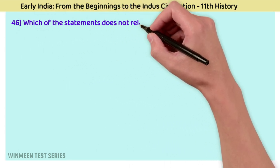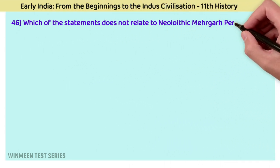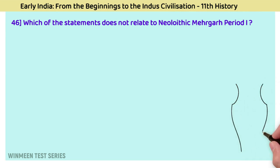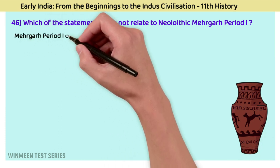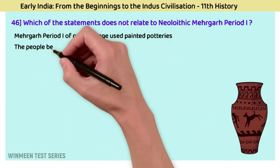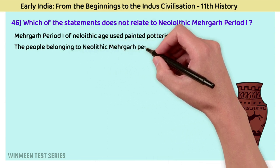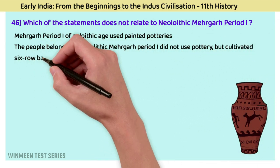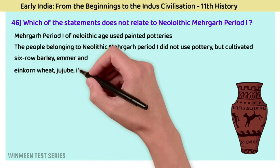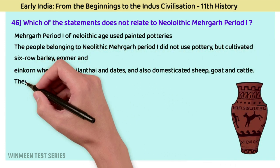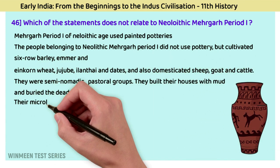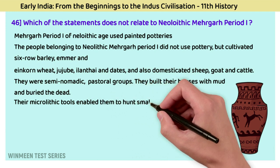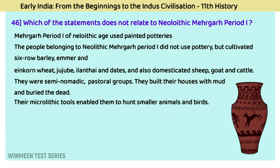Question 46: Which statement does not relate to Neolithic Mehrgarh Period 1? The answer is that Mehrgarh Period 1 used painted pottery. The people of Neolithic Mehrgarh Period 1 did not use pottery, but cultivated six-row barley, emmer and einkorn wheat, jujube, eelande, and dates. They also domesticated sheep, goat, and cattle, were semi-nomadic pastoral groups, built houses with mud, buried the dead, and their microlithic tools enabled them to hunt smaller animals and birds.